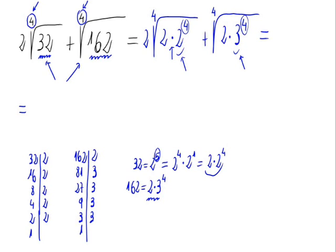This would be 2 times the 2 that gets out of the root, times the 4th root of 2, the 2 that is left, plus—I'm sorry, the 3 goes out of course, I forgot about it—times the 4th root of the 2 that is left inside.